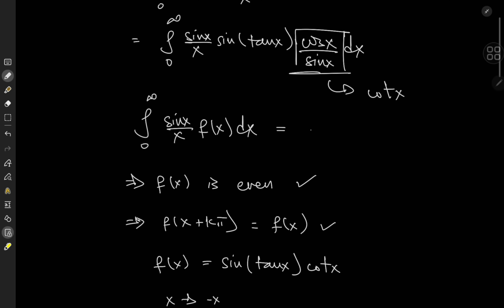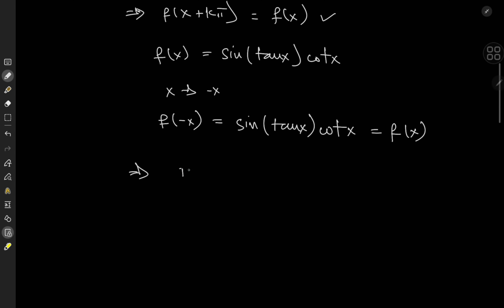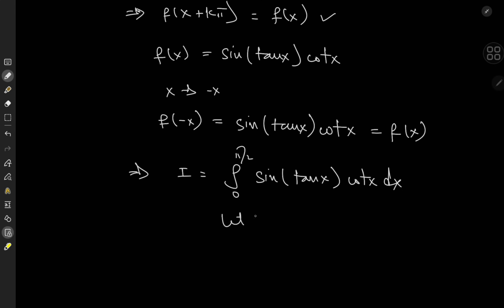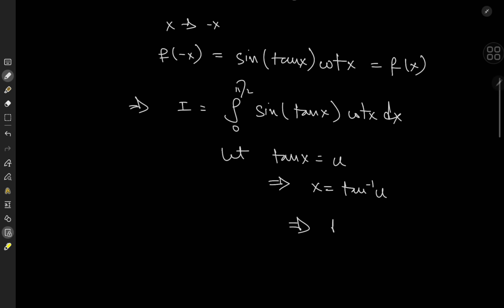The formula states that the integral is equal to the integral from 0 to pi over 2 of f of x dx. So all of this implies that the target integral I is now the integral from 0 to pi over 2 of sine of tangent x times cotangent x dx. One option would be to let tangent x equal u, which implies that x equals arctangent u and dx equals du over 1 plus u squared.